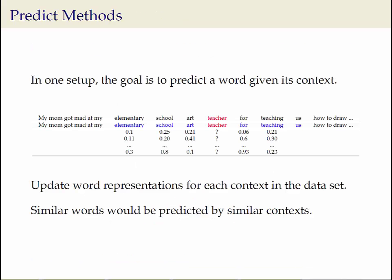Prediction methods such as word2vec have a different objective. In the simplest setup, the goal is to predict the word, represented as a dense numerical vector, by using the vector of the words in its context. This prediction step is repeated across all contexts in the dataset. In the end, similar words are predicted by similar contexts.